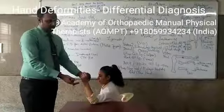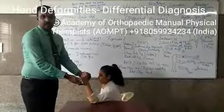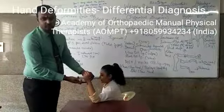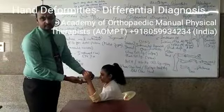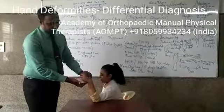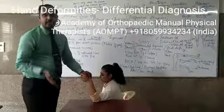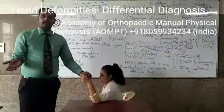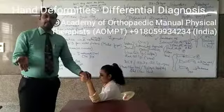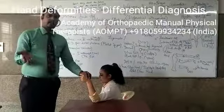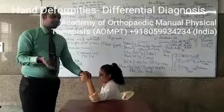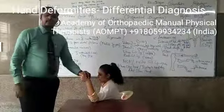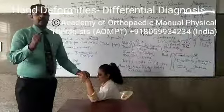Rheumatoid arthritis can cause an ulnar drift in the wrist. That is the ulnar deviation of the wrist. Ulnar drift in the wrist means it is an ulnar deviated position of the wrist, caused by rheumatoid arthritis.